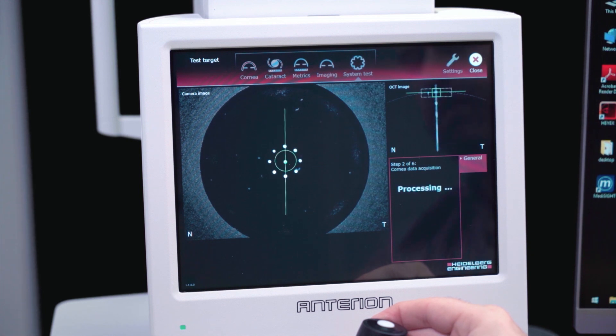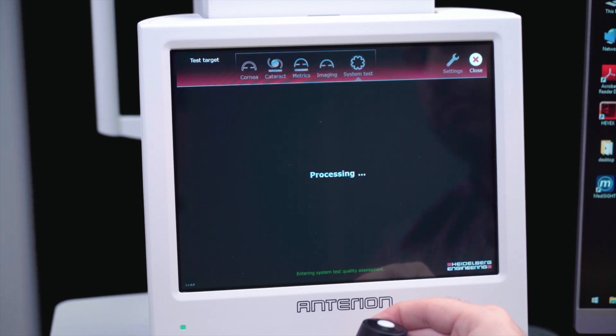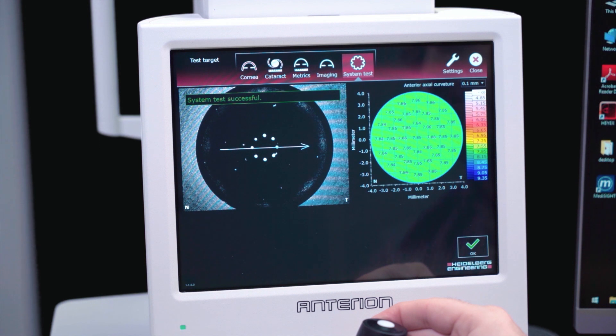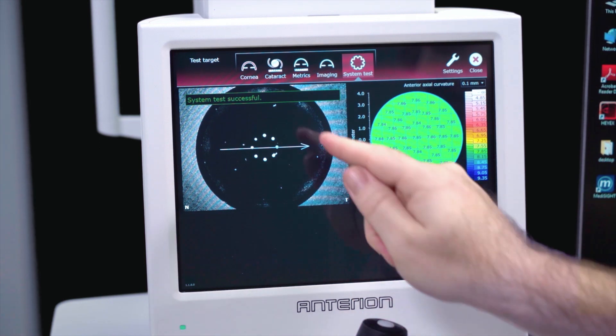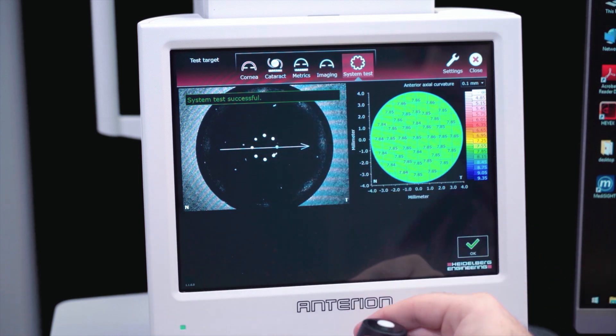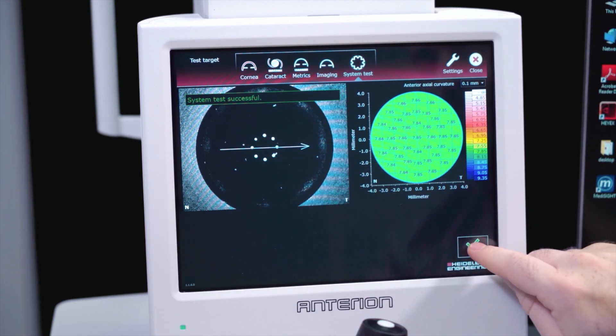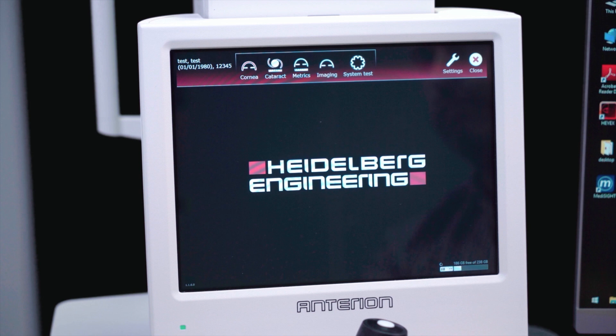The device will automatically go through six steps as part of the system test. If the system test was successful, press OK in the lower right corner. If the system test failed, please consult your Anterion user manual.